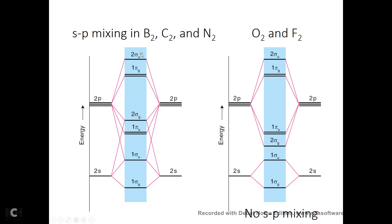Don't worry about the red lines — they make the graph difficult to read. They indicate that the 2s orbital can interact with the 2pz orbital, and that the S orbital can interact with the 2pz orbital. It just makes the MO diagram more difficult to read. I would just use the diagram without SP mixing and then shift things accordingly: shift this one down, this one up, this one down, this one up. That's the essence of SP mixing.